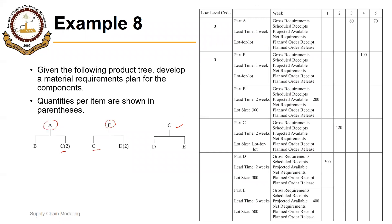There are no scheduled receipts, so net requirements will be equal to gross requirements. The lead time is one week, the lot sizing policy is lot for lot, so we will need a planned order to receive equal to net requirements, and planned order release will be one week prior to that. So this will be 60. That is simple for part A.